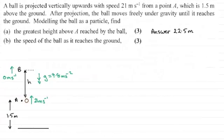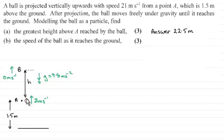Hi there. In part B of this question we're asked to find the speed of the ball as it reaches the ground. I've also given you the answer to part A, where we had to find the greatest height that the ball rose above A, which was 22.5 metres. If you'd like to have a go at this question, just pause the video for a moment. Okay, welcome back if you had a go.